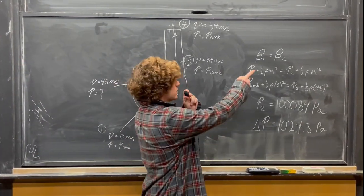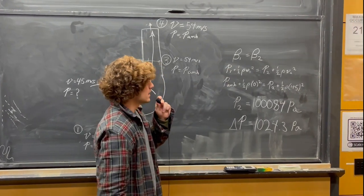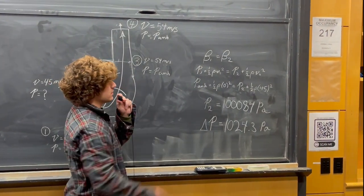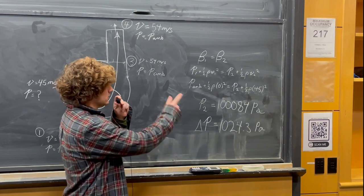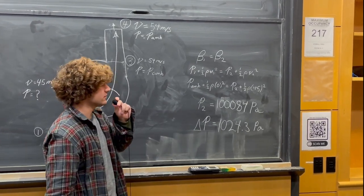I do that by saying Bernoulli one equals Bernoulli two: P1 + 1/2 ρv² equals P2 + 1/2 ρv².